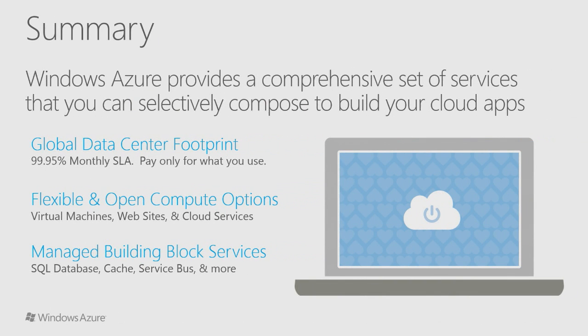In summary, Windows Azure provides a comprehensive set of services that you can use selectively to build applications. There is a globally distributed, robust, and highly available network of data centers. You can take advantage of this great hardware and only pay for what you use — there is no need to buy a large number of computers that sit around idle, nor is there a need to forgo running a job or investigating a data set because you can't afford that many physical computers. There are many different ways to use Azure, and you can choose whatever level of flexibility and configurability you like. Thanks for watching — I hope you've learned more about the core components and services that make up Windows Azure, and gained an understanding of how Azure can help researchers and scientists be more productive.